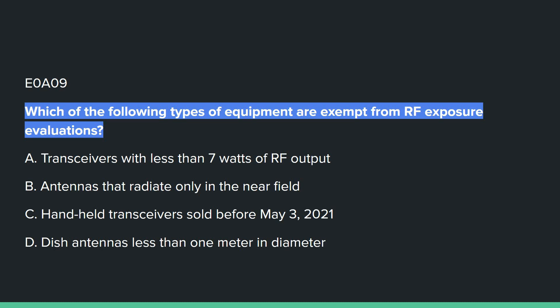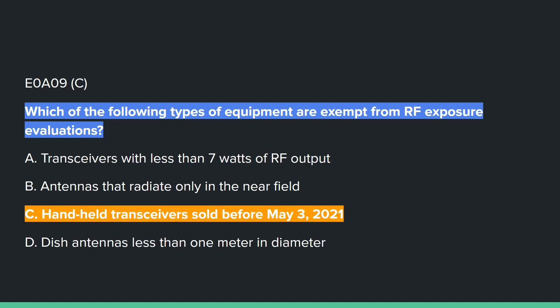E0A09: Which of the following types of equipment are exempt from RF exposure evaluations? C — handheld transceivers sold before May 3, 2021.